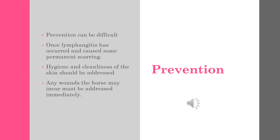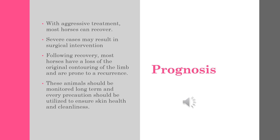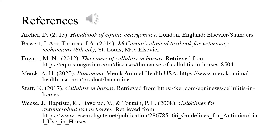Prevention of cellulitis in horses is very difficult. Once lymphangitis has occurred, it can cause permanent scarring. Hygiene and cleanliness of the skin should always be addressed, and any wounds the horse may incur should be treated immediately with aggressive treatment. Most horses can recover from cellulitis, but severe cases may result in surgical intervention. Following recovery, horses tend to have a loss of original contouring of the limb and are prone to recurrence. These animals should be monitored long-term, and every precaution should be utilized to ensure that skin health and cleanliness is maintained.